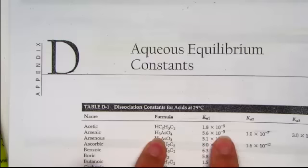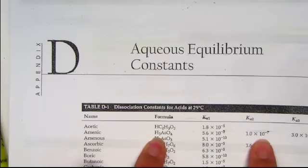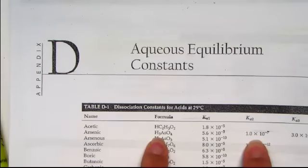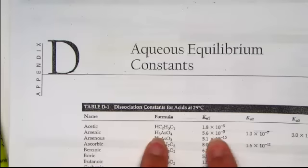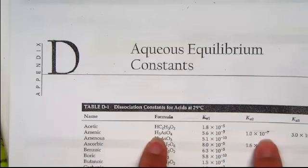For arsenic acid, Ka1 is 10 to the negative third and Ka2 is 1 times 10 to the negative seventh. Ka2 is so significantly smaller than Ka1, its contribution to the pH of our system is negligible. When I'm asked to calculate a pH of a polyprotic acid, I only need to remove the first hydrogen to find the pH. I do not remove the second hydrogen as its contribution to the system is insignificant.